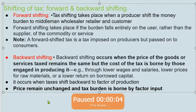An important point to note: a forward shifted tax is a tax imposed on the producer but passed on to the consumers. So the incidence of a forward shifted tax is totally on consumers. Backward shifting occurs when the price of goods or services remains the same.